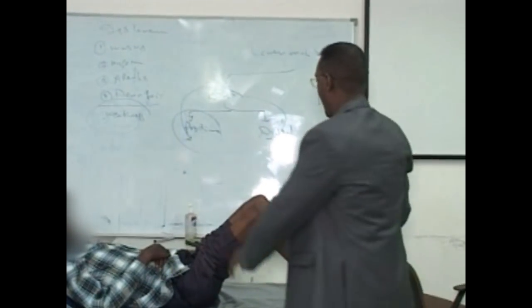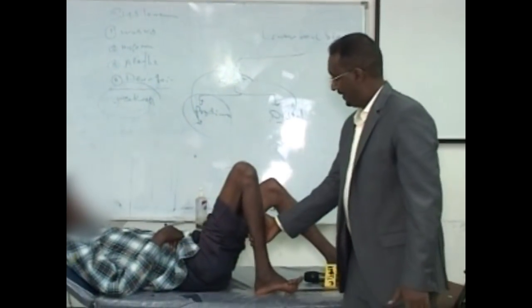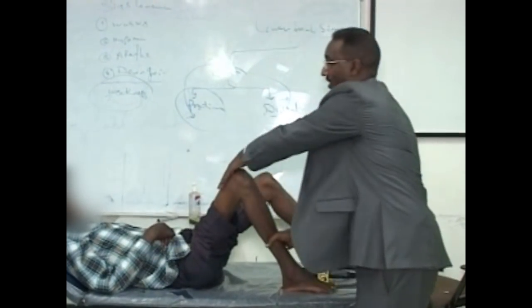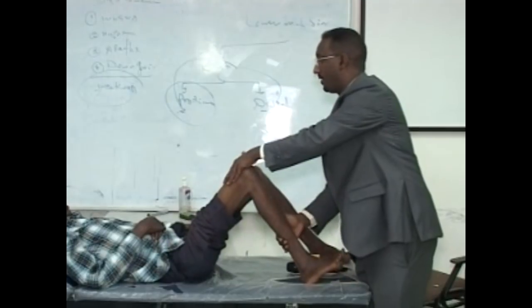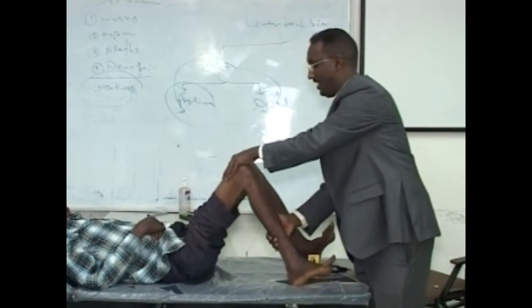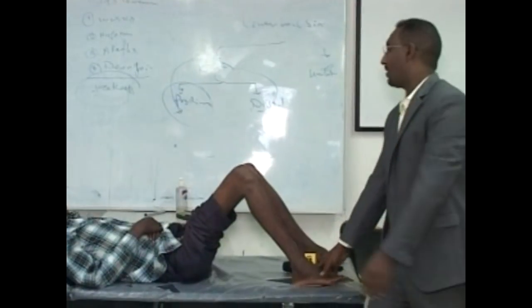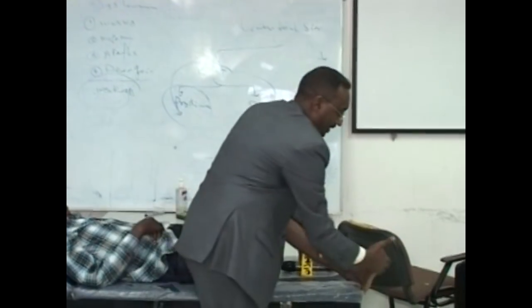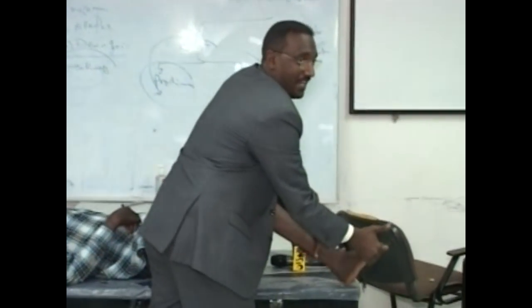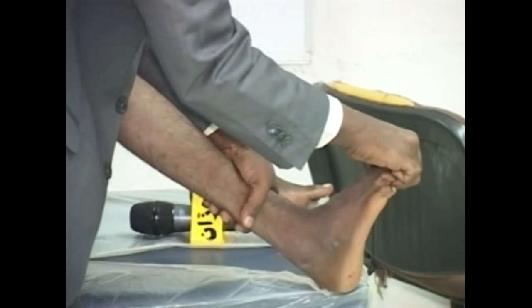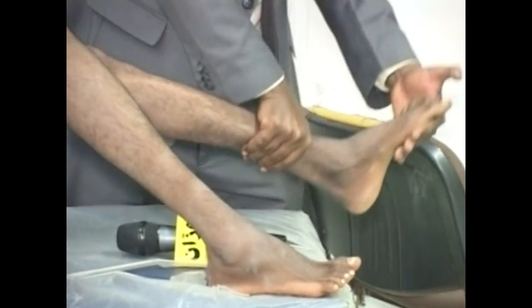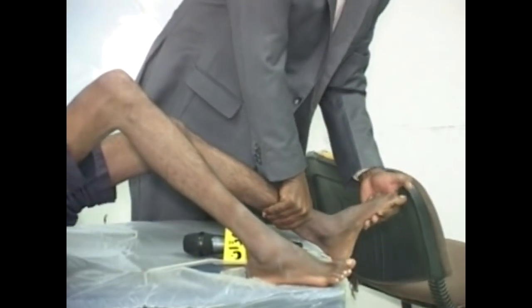I come to the knee. He cannot do extensor — look for the extensor. Out, out. Push in — very strong. Flexor, very strong. Out — he cannot do extensor. Then I will come to the distance. Look for this man — push in. See how this man is strong distally. He is distally more stronger.